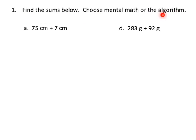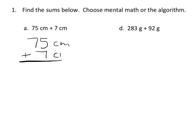This says: find the sums below, choose mental math or the algorithm. I'm going to focus on the algorithm. First, 75 centimeters plus 7 centimeters — I'll label them. Seven plus five is 12, so that's a 2, carry the 1. Engage New York likes to put the carried 1 down at the bottom instead of up top like in the traditional algorithm.